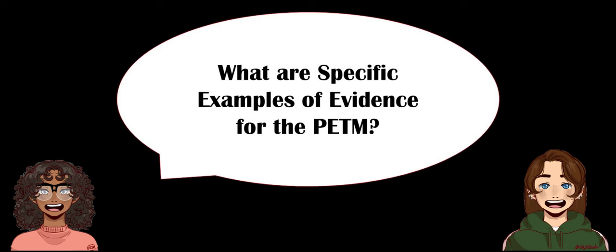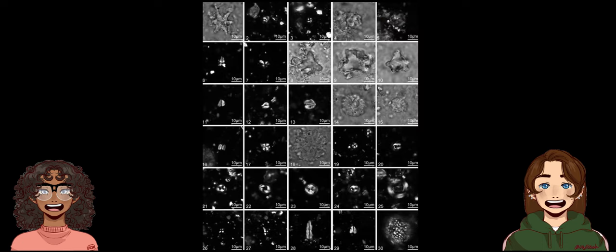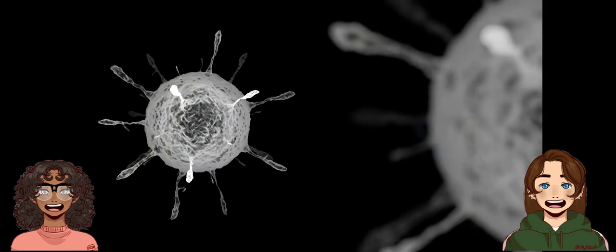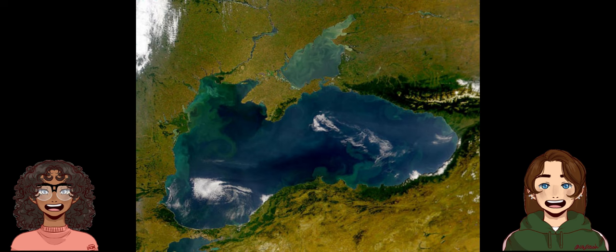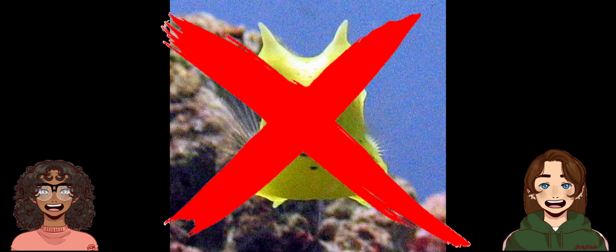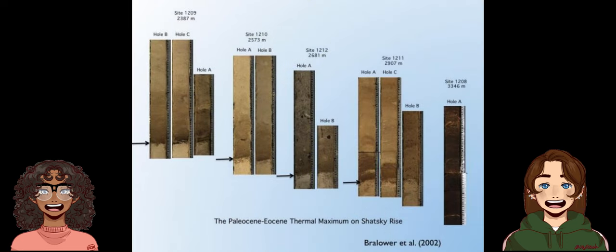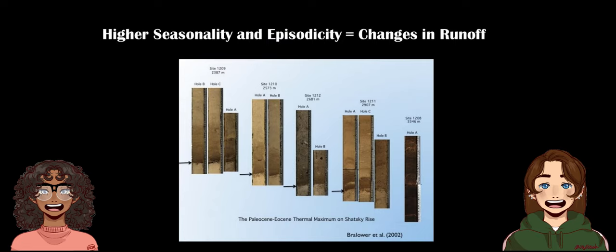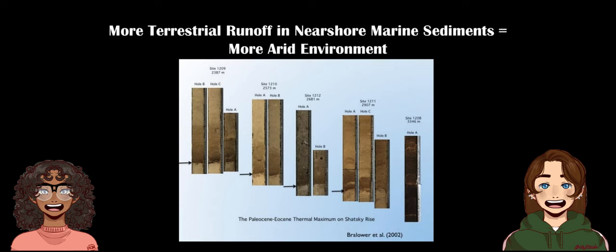What are some specific examples of evidence from the PETM? Well, nanofossil assemblages are a great example. A famous study of the PETM that discusses these nanofossil assemblages is Shatsky Rise in the Pacific Ocean. There is amazing preservation of organic compounds, specifically algae and bacteria, which helps to demonstrate the anoxic environment. The PETM results in one of the largest sea life mass extinctions, and Shatsky Rise helps to solidify this claim. The rate at which sediment was deposited is some physical evidence for this event. The warmer temperatures resulted in both higher seasonality and episodicity, resulting in changes of runoff in many sediment cores. There was more terrestrial runoff in nearshore marine sediments, reflecting a more arid environment because of increased temperature.